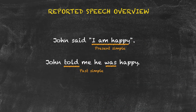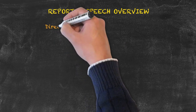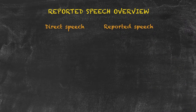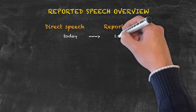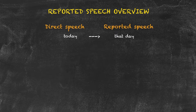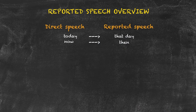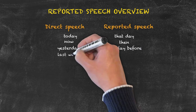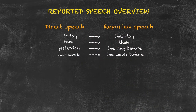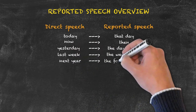Just as the tense needs to be changed, so do other words relating to time and place. Let's look at some of these changes: 'today' becomes 'that day' — meaning that day when he said it. 'Now' becomes 'then.' 'Yesterday' becomes 'the day before' or 'the previous day.' 'Last week' becomes 'the week before' or 'the previous week.' 'Next year' becomes 'the following year' or 'the year after.'